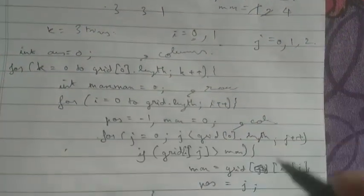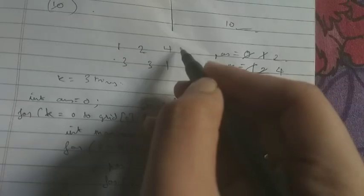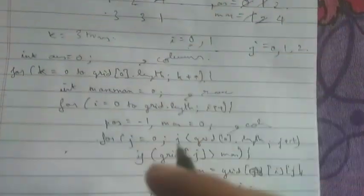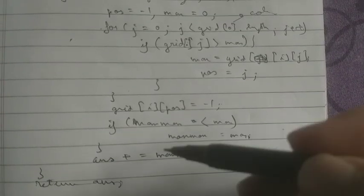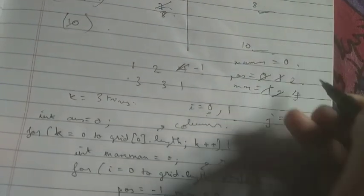Now we set grid[0][2] = -1, overwriting it as -1 — that is deleting the maximum element. Then we check if maxMax is less than max: max is 4 and maxMax was initialized as 0, so 4 > 0, yes — we overwrite maxMax as 4.